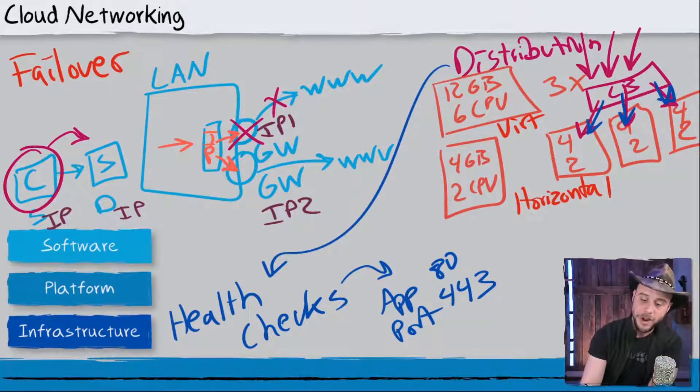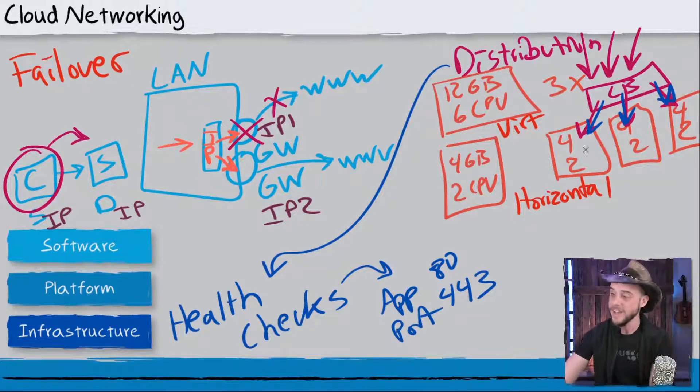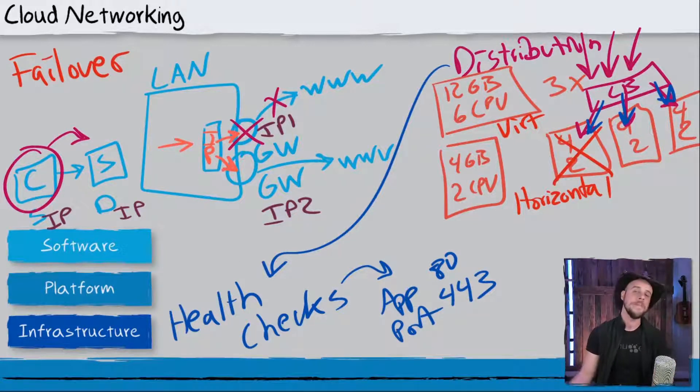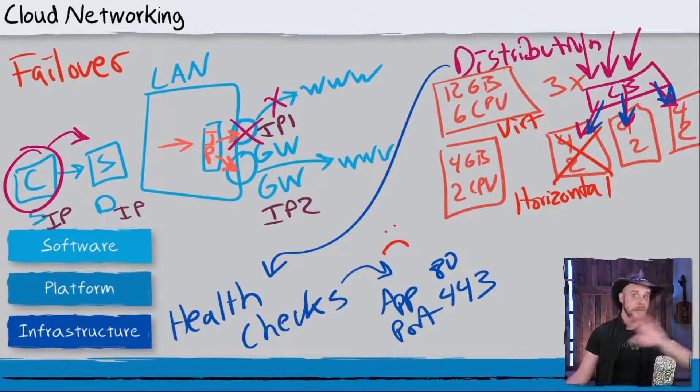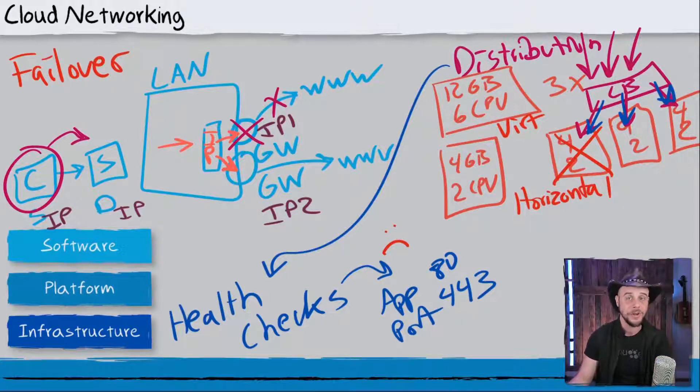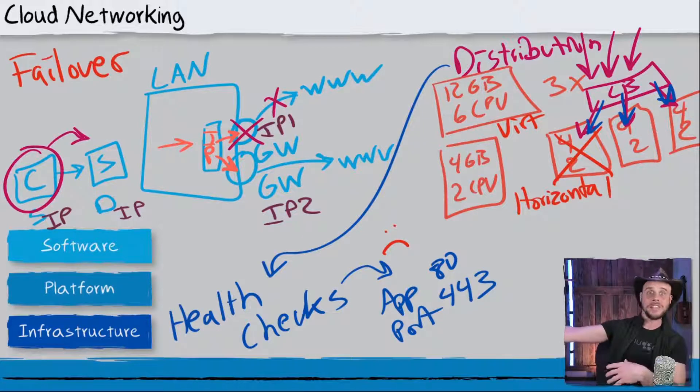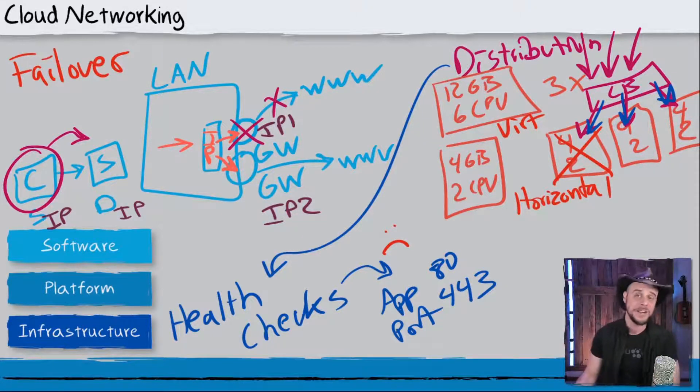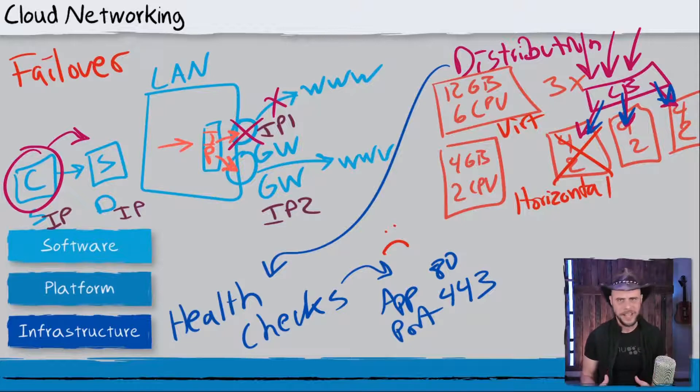Now, if something goes wrong, I know heaven forbid something go wrong, and one of these systems go down, it will stop responding to the health checks. And the load balancer can see, oh, we got a bad problem over here. Let's stop sending traffic to that particular node. And in this way, then we are no longer sending bad requests, bad connections that are experienced by our users on the far side.